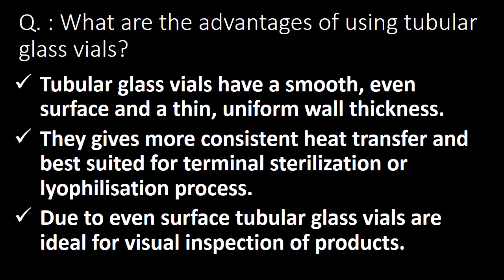Next very important question: what are the advantages of using tubular glass vials? First, tubular glass vials have a smooth, even surface and thin, uniform wall thickness. Second, they allow more consistent heat transfer and are best suited for terminal sterilization or lyophilization processes. Third, due to the even surface, they are ideal for visual inspection of products.